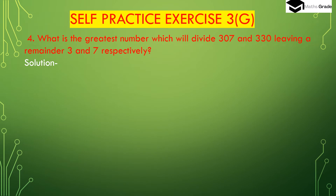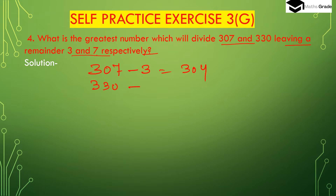Question number 4: What is the greatest number which will divide 307 and 330 leaving a remainder 3 and 7 respectively? We have to find the greatest number which will divide 307 giving remainder 3, and divide 330 giving remainder 7. So first, subtract: 307 minus 3 is 304, and 330 minus 7 is 323.